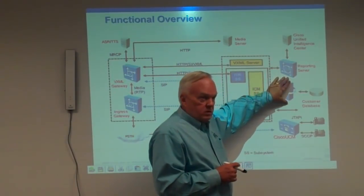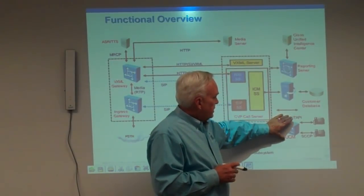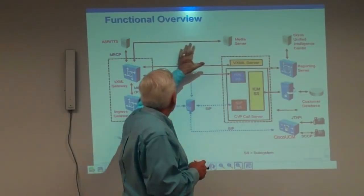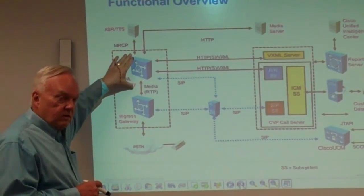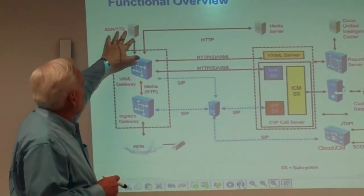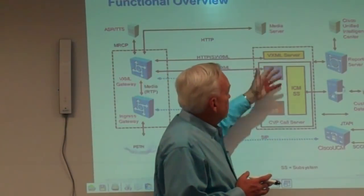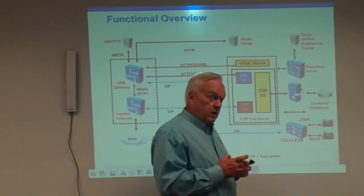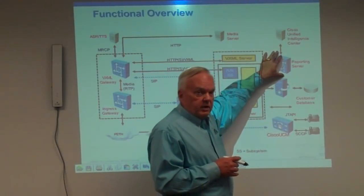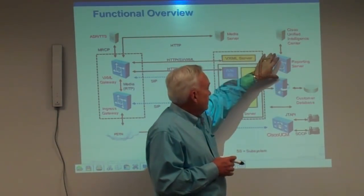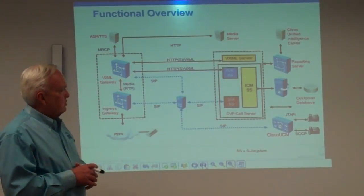We also have an ICM which includes the routers, loggers, and all components for ICM. We have a Communications Manager. Over on this side we see a component called the VXML gateway — this is the workhorse of CVP, doing all the work for us. It makes a connection to a speech recognition server and also to a media server. We also see a VXML server, which serves up VXML pages that are instructions created through Call Studio. And a reporting server, plus Cisco Unified Intelligence Center, which is the reporting structure of the system.